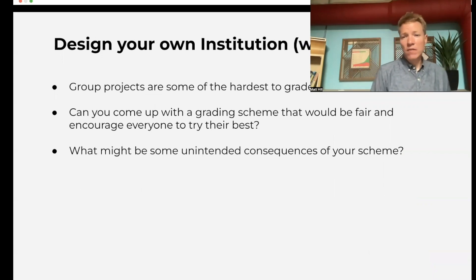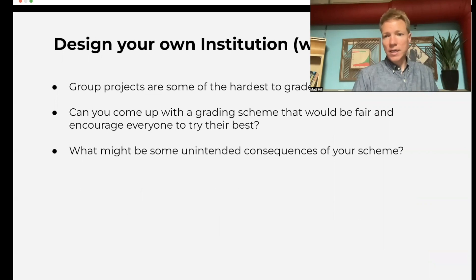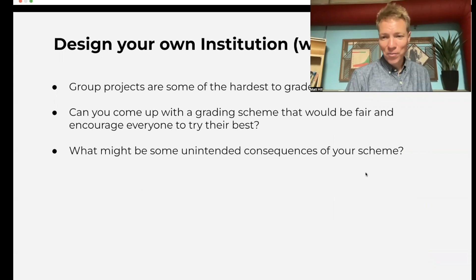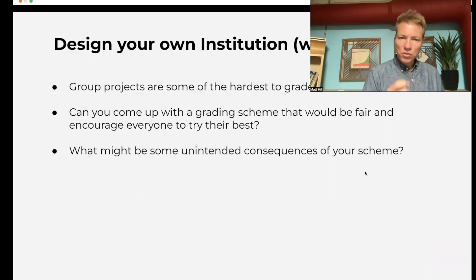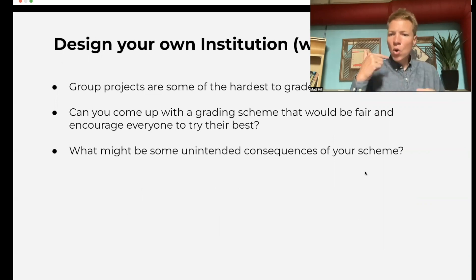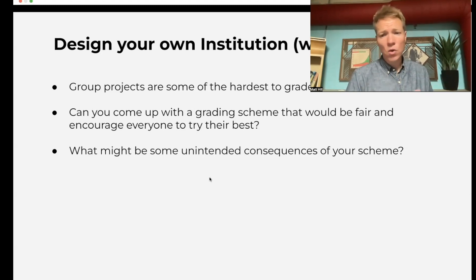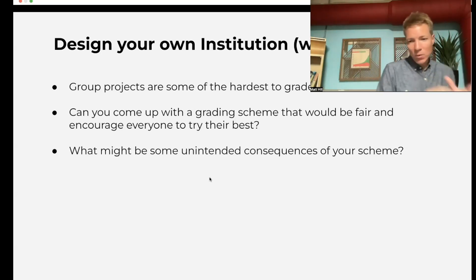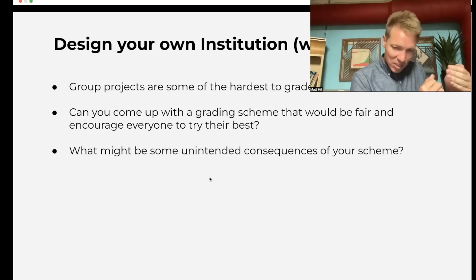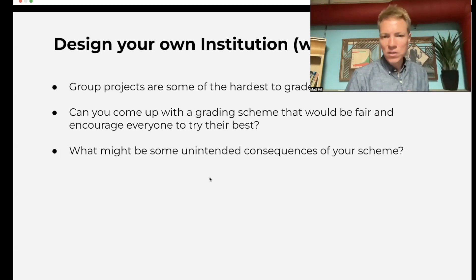As an activity, you can have students try to design their own institution to grade group projects. As any teacher knows, it's very hard to grade group projects — there's always a free rider issue where some students aren't doing work, and a good student might wonder why they should do all the work. Ask students to come up with a fair grading scheme, and then, recalling day two, ask what might be some unintended consequences of that scheme. There are no right answers; it's just getting them thinking about how to design policies to get the outcome we want — how to design the institution so that intention matches outcome.